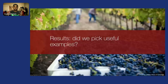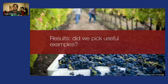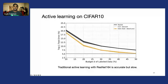To quantify this and see whether we actually pick useful examples, we evaluated on a number of large-scale datasets. Starting with CIFAR-10, the x-axis represents the amount of data labeled so far—our labeling budget—and the y-axis is top-1 test error for the model we're training.